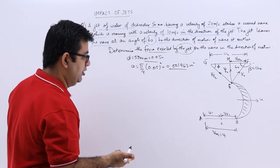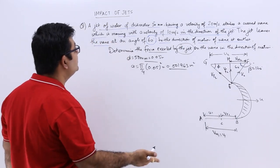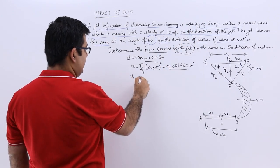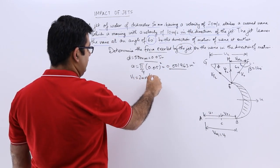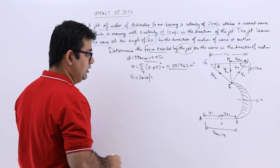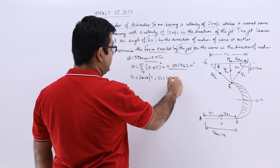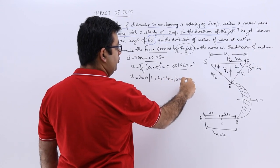So let us find out the value. So v1 is given to us, v1 is 20 meters per second. Then you have u1, it is 10 meters per second, which is equal to u2.